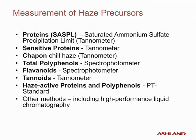Haze-active proteins and polyphenols can also be measured using the PT-standard portable nephilometer. Results are given as a ratio between proteins and polyphenols present in the beer and give an indication of the potential stability. The PT-standard nephilometer is portable and can be brought to a brewery location to perform on-site analysis in real time. Ashland can also employ a variety of other methods as needed, such as high-performance liquid chromatography.